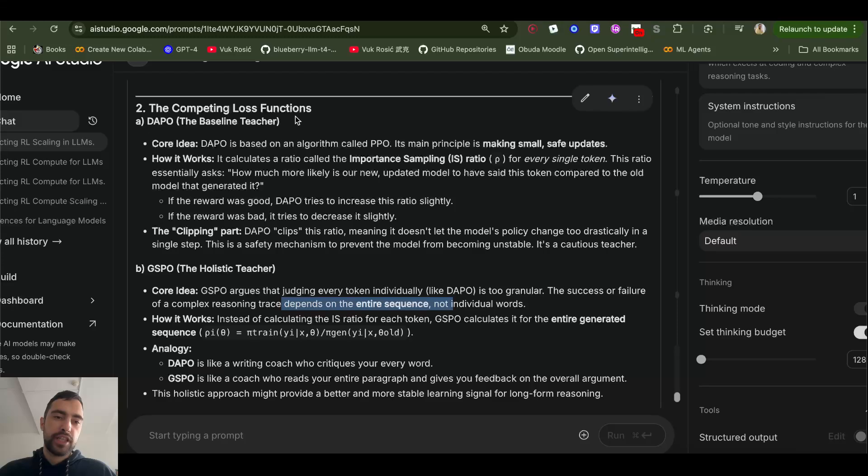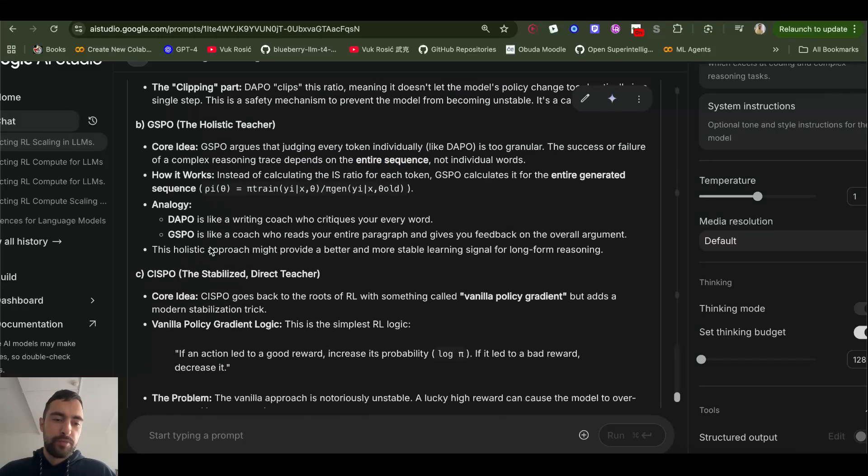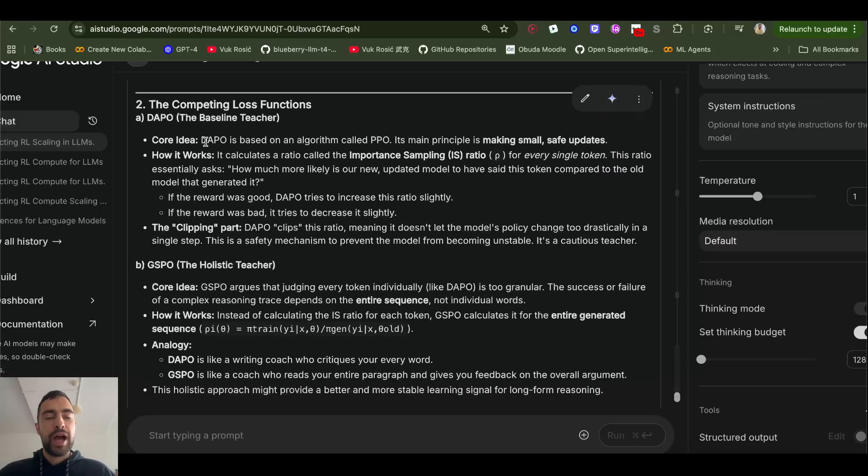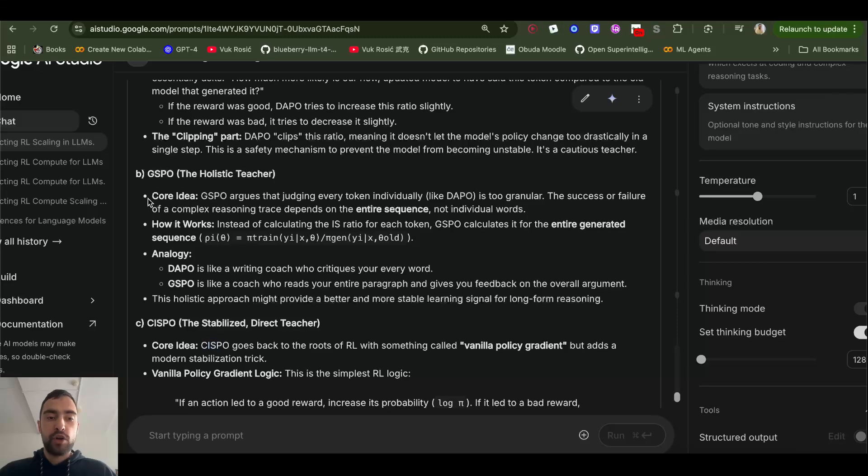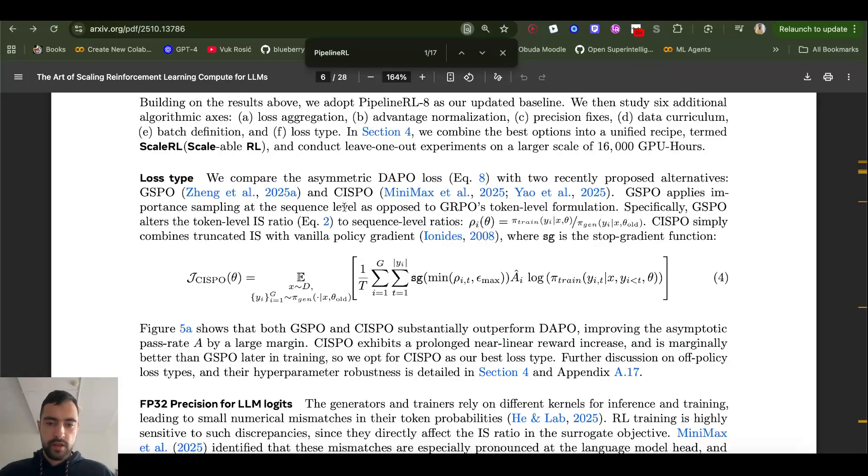Then it measures three different loss functions or optimization methods, DAPO, GSPO, and CISPO. So I got Gemini here to quickly summarize, although I think I need to create videos on each of them. And I have a good video on GSPO. I spent like 10 hours making it so you can check it. But it just seems like they find that CISPO has highest ceiling. So CISPO is their choice.